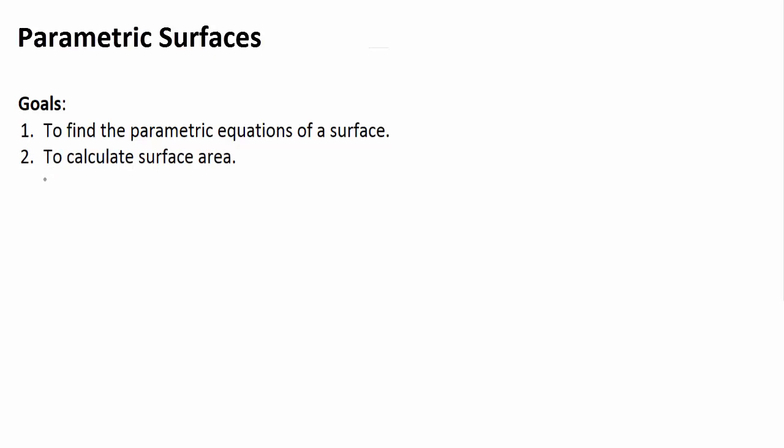If we're talking parametric surfaces, the goal is to find the parametric equations of a surface and to calculate surface area. So we're going to have a surface in this section. Imagine you might draw the surface — it might look like some kind of hill in space. We call that surface S.